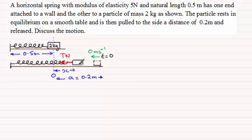There'll also be the weight. So I'll mark that in. Mass is 2 kilograms. That's going to be 2g newtons. And there'll also be a reaction from the surface of the table here. We'll call that R newtons. It's a smooth table, so there's no friction.